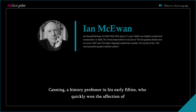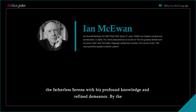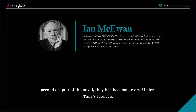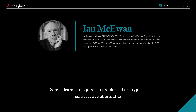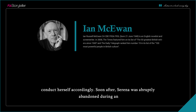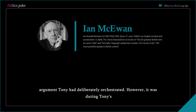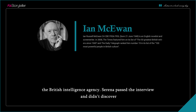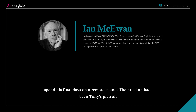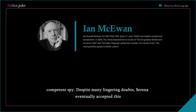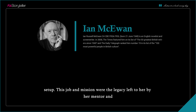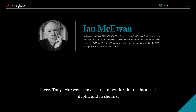In the 1960s and 1970s, most intellectuals questioned various flaws in capitalist society and became disillusioned about the future. Serena, standing firmly in the conservative camp, found herself at odds with her surroundings. Her actions caught the attention of Tony Canning, a history professor in his early fifties, who quickly won the affection of the fatherless Serena. They became lovers, and under Tony's tutelage, Serena learned to approach problems like a typical conservative elite. Soon after, Serena was abruptly abandoned, but it was during Tony's departure that he left her with the opportunity to work for MI5.